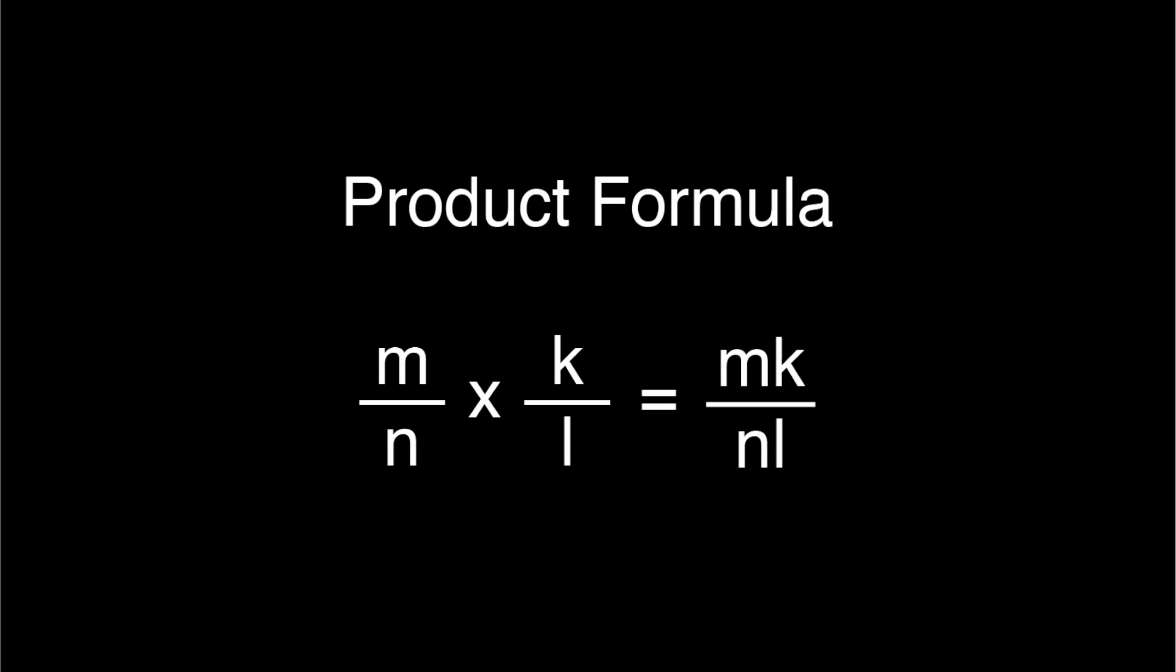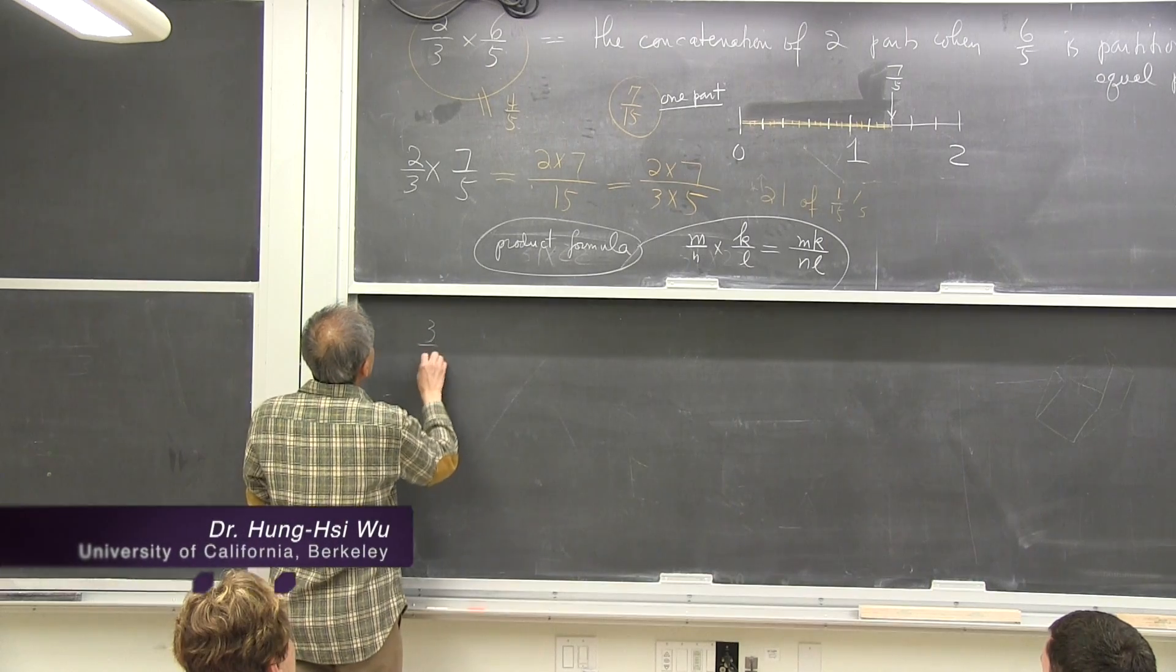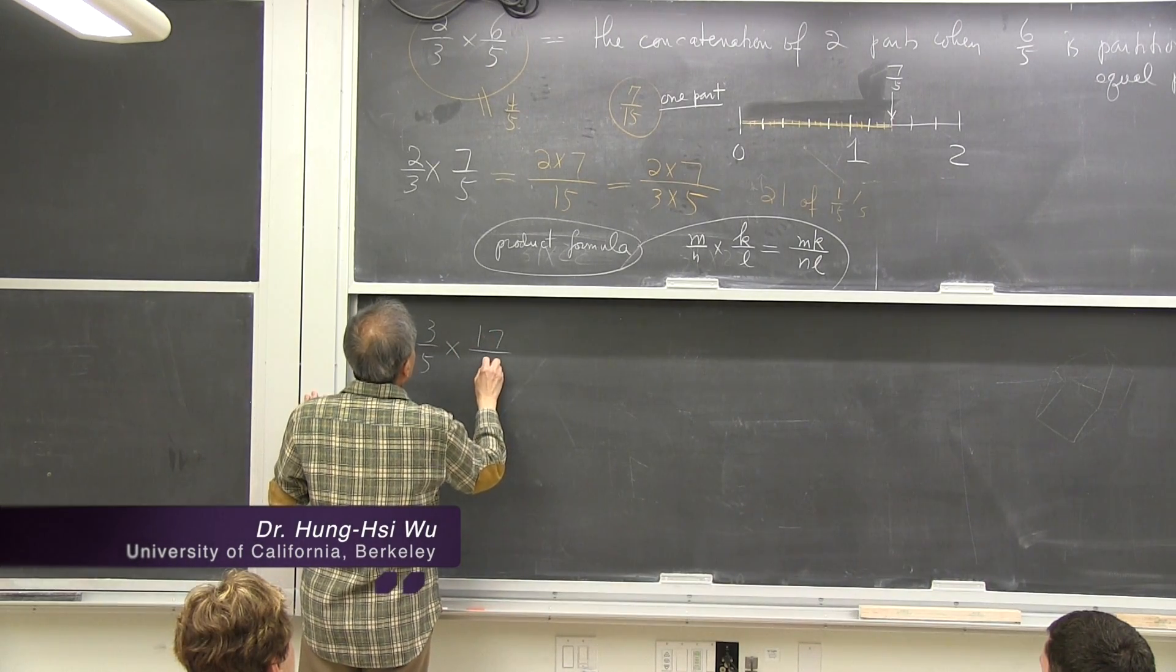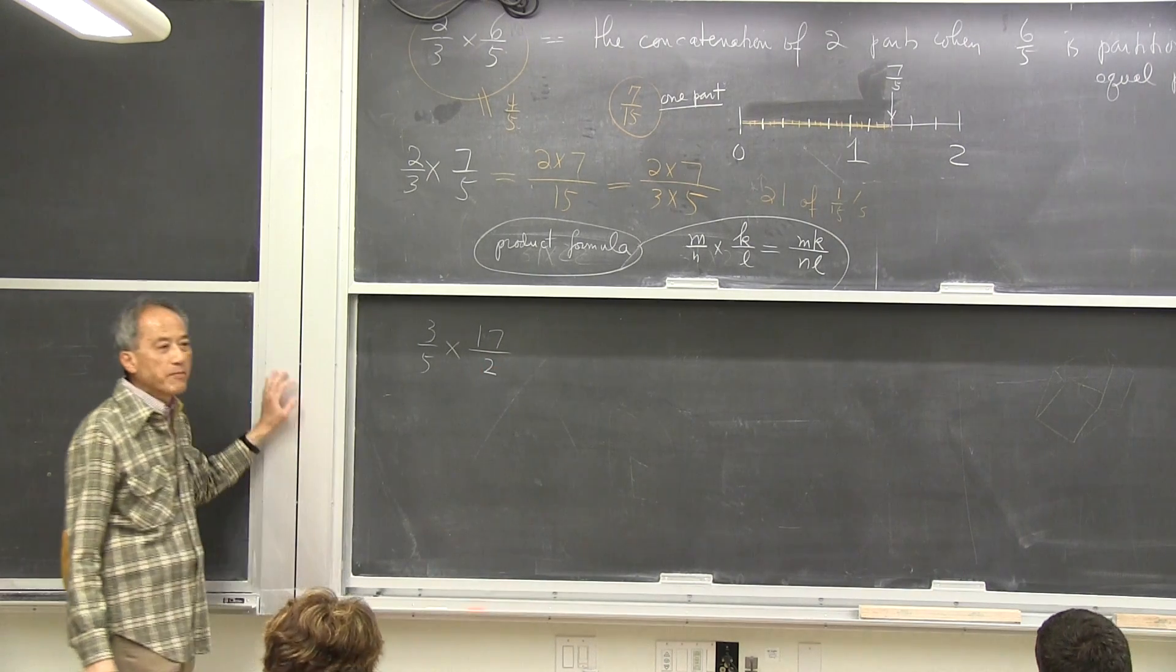So, in order for you to understand why this is true, let's do something else. Let's say 3/5 times 17/2. What would that be?